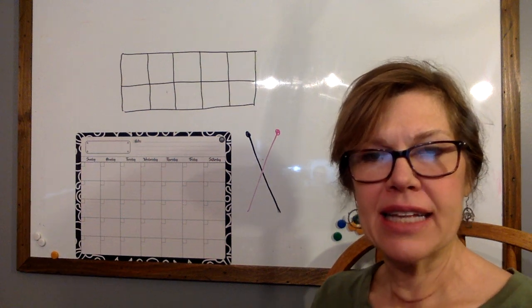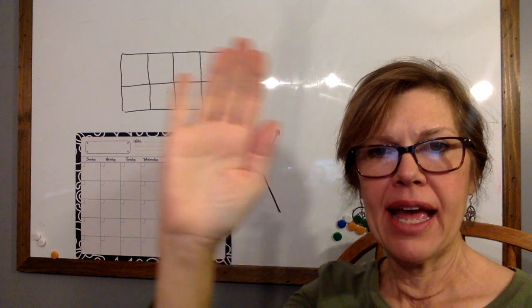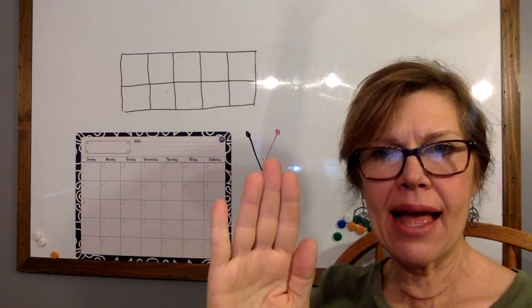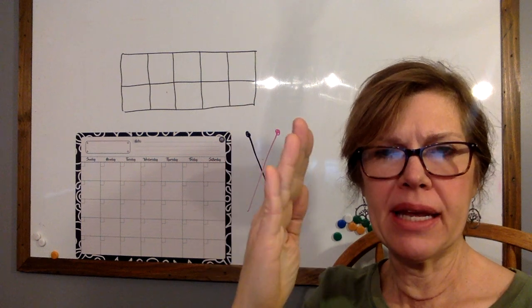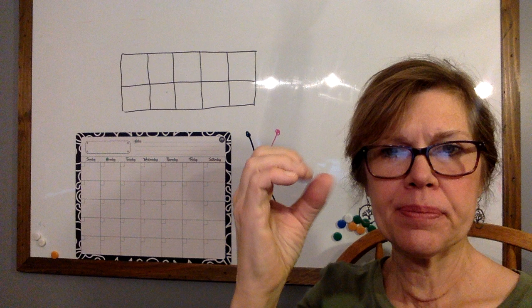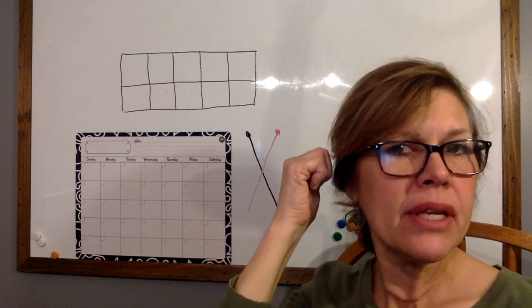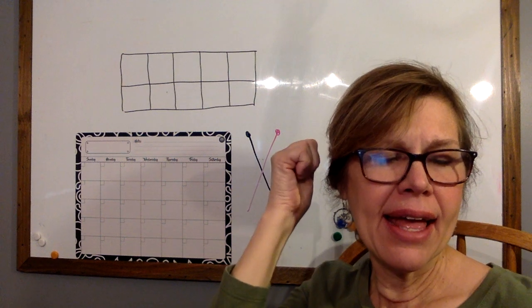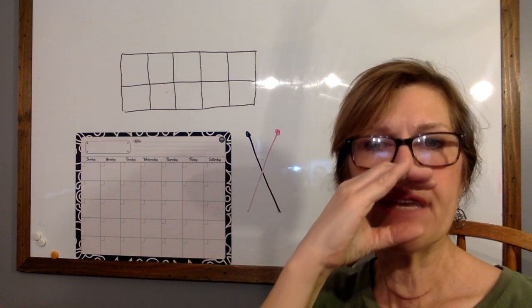Hi friends. Let's get started with the sounds. Put your left hand up. A says ah, ah, apple. B says buh, buh, bunny. C says kuh, kuh, cat. D says duh, duh, dog. E says eh, eh, elephant. F says f, f, fish.